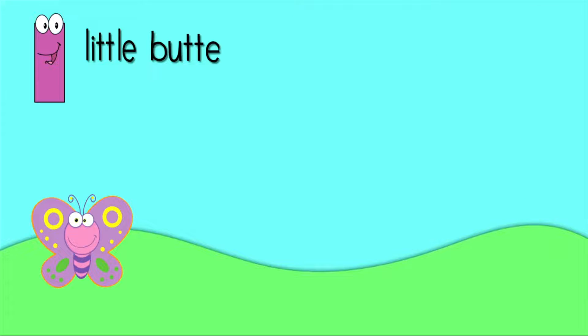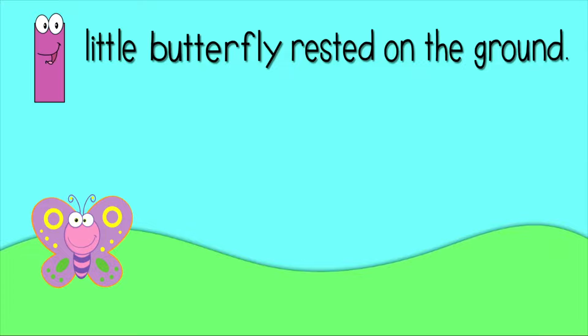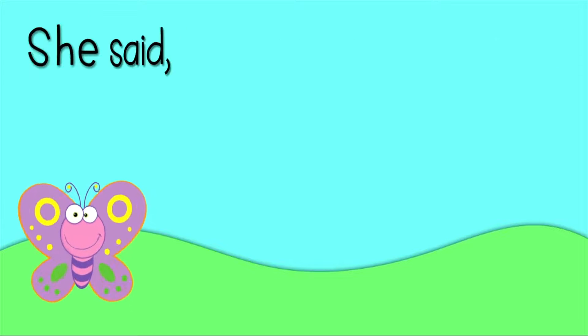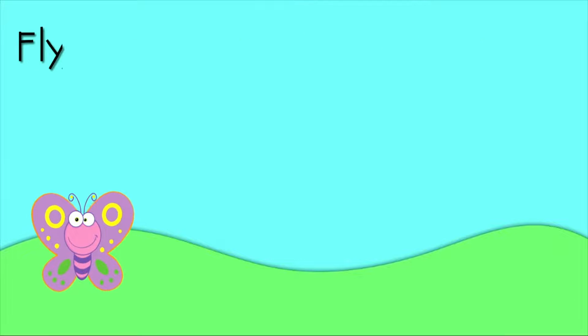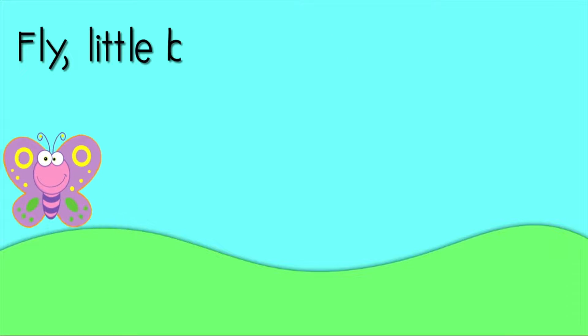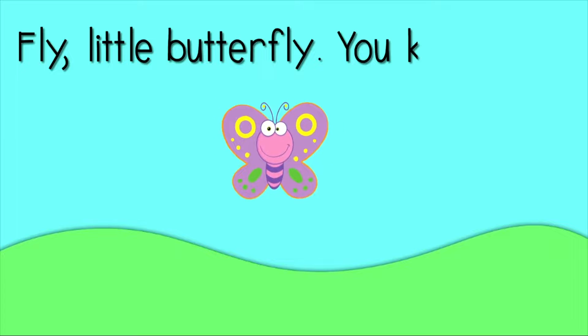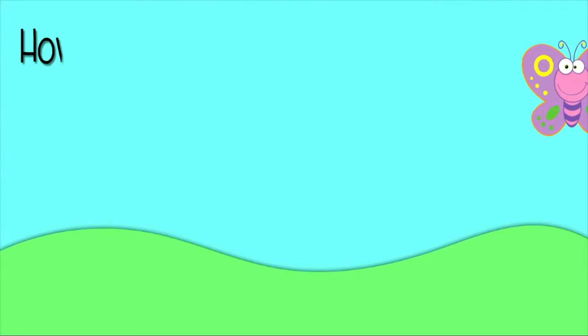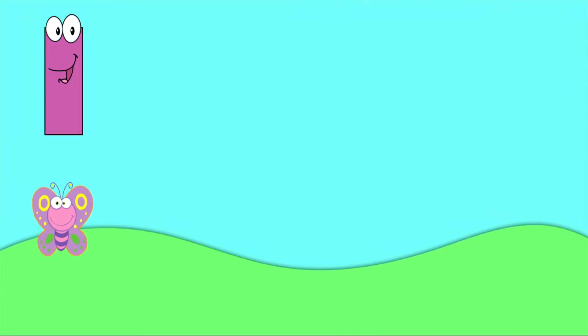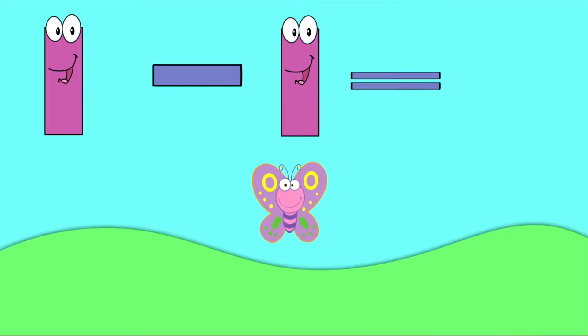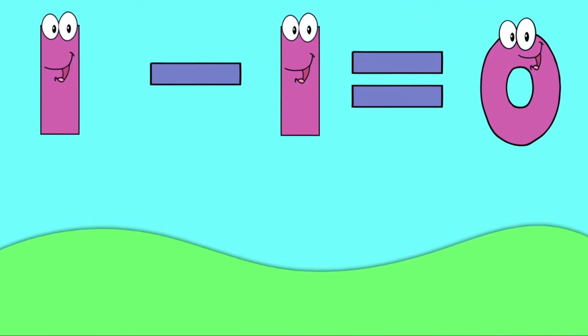One little butterfly rested on the ground. She said, I want to fly all around. Fly, little butterfly, you know how. How many butterflies are left now? One butterfly minus one butterfly equals zero butterflies.